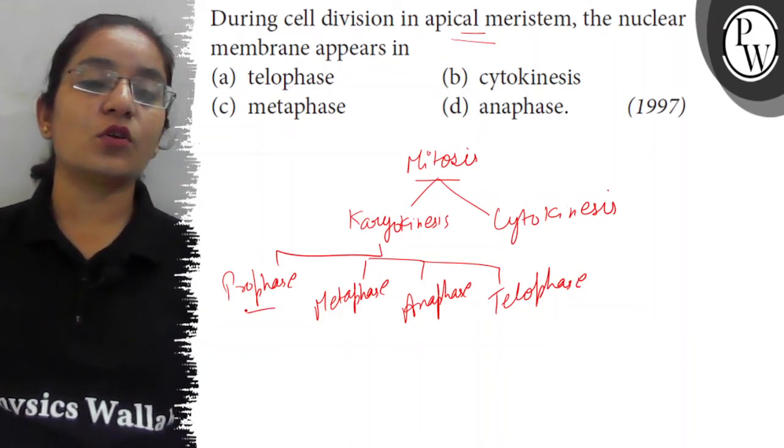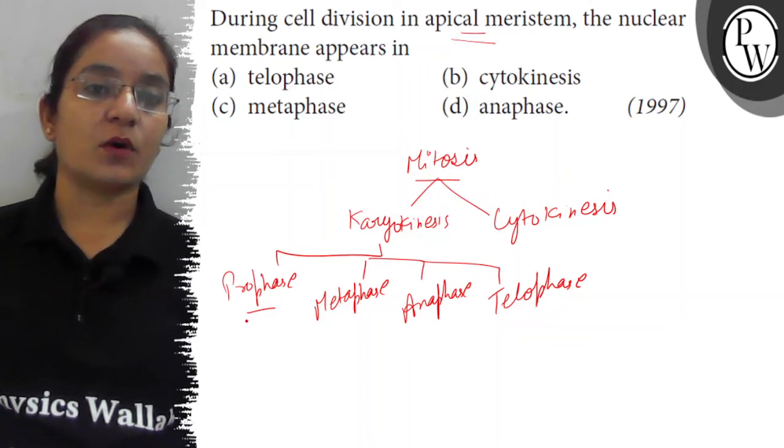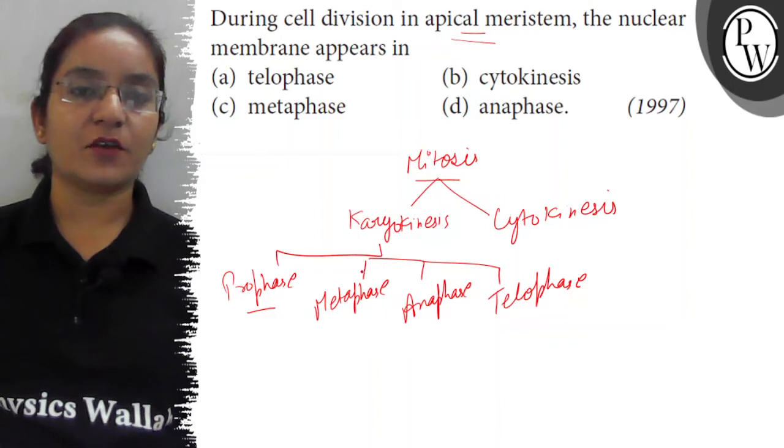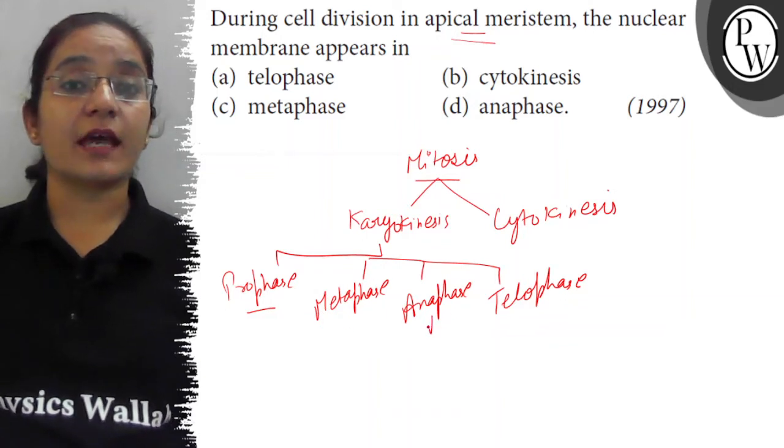Cell organelles and nucleolus disappear, and condensation of chromosomes occurs. All the chromosomes align themselves on the equatorial plate in metaphase stage. Then in anaphase, the centromere splits and sister chromatids